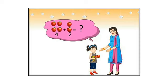Now here you can see Neha. This is a girl, Neha. Neha has four apples, but her mama gave her two more apples. Now children, you have to find out how many apples does Neha have now? Think and then answer.